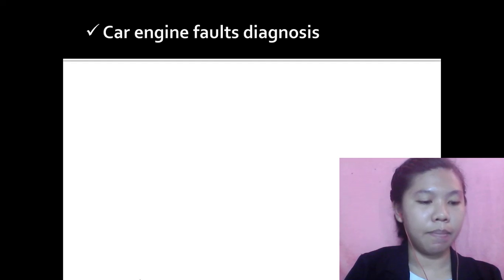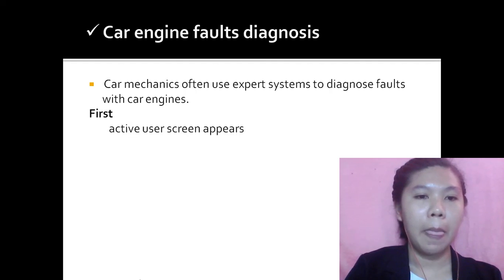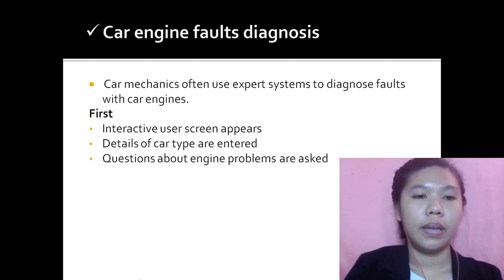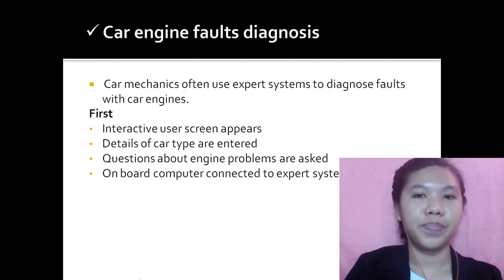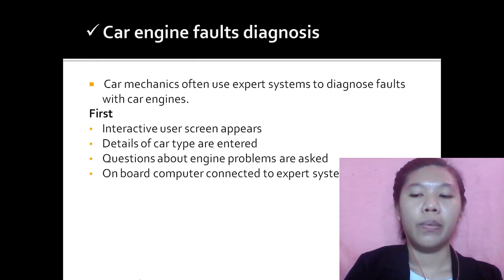The first example is where car mechanics often use Expert Systems to diagnose faults with car engines. First, an interactive user screen appears and details of the car type are entered. Questions about engine problems are asked. There are mechanical shops using computer systems to detect problems or faults in the vehicle.